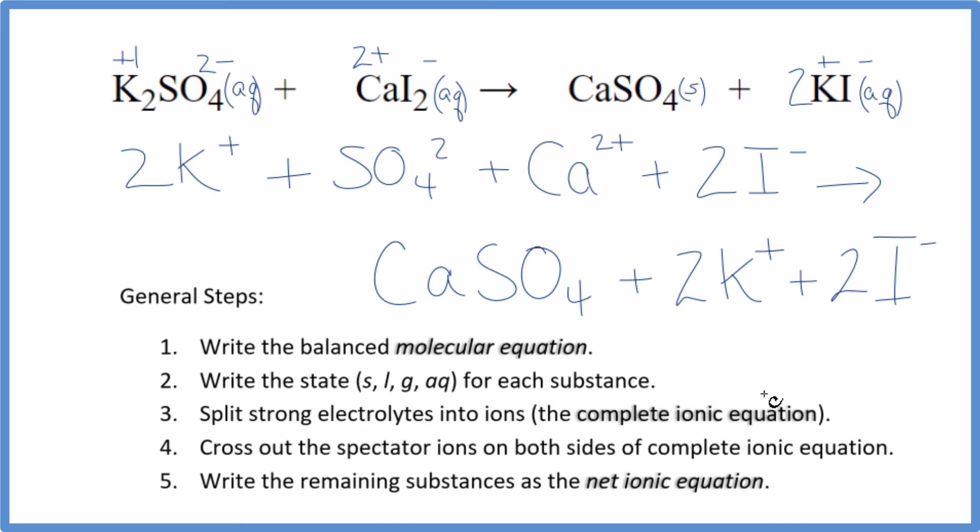And this is the complete or total ionic equation. Now we can cross out these spectator ions. They're on both sides. So as I look at the reactants and the products, in the reactants, I have two potassium ions and in the products. So that can be crossed out. Two iodine ions, again, in the products. Cross that out.